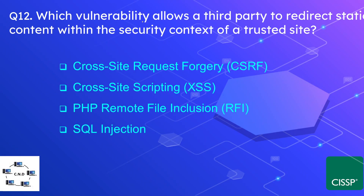Question number 12: Which vulnerability allows a third party to redirect static content within the security context of a trusted site? The options are cross-site request forgery (CSRF), cross-site scripting (XSS), PHP remote file injection (RFI), or SQL injection. The correct option is cross-site request forgery — when static content is involved, the answer is CSRF.